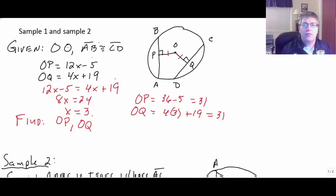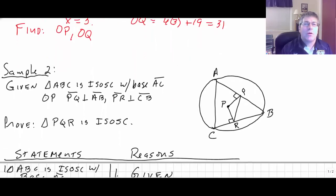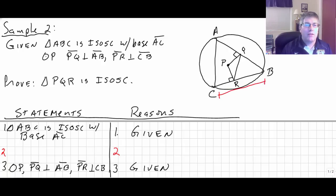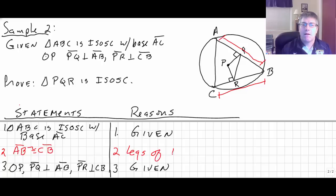Our second sample problem is a two-column proof. We're given that triangle ABC is isosceles with base AC, and this is circle P, so P is the center of our circle. PQ is perpendicular to AB and PR is perpendicular to CB. We should know that AB and CB are congruent — those two chords are congruent — because the legs of an isosceles triangle are congruent.